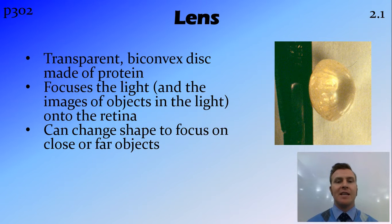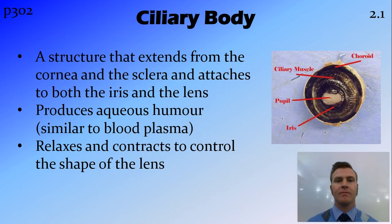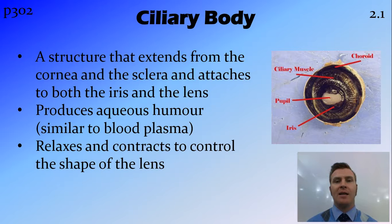The lens is inside the eye. It's a biconvex disc made of protein and its main job is to focus the light onto the retina. To do this it changes shape to focus on either close or far objects. The job of changing the shape of the lens comes from the ciliary body, which is attached to the lens and contracts and expands to control that shape depending on whether you're focusing on something far away or close to you.